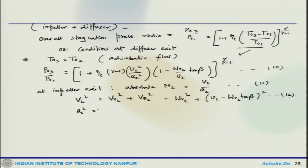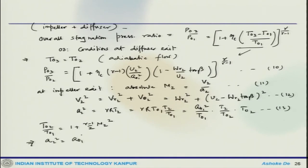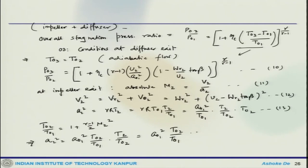The speed of sound A2 squared equals gamma R T2, which is gamma R T01 times (T2/T01), giving A01 squared times (T2/T01) times (T02/T02). Writing T02/T01 as 1 plus (gamma minus 1)/2 times M2 squared, and expanding, A2 squared reduces to A01 squared divided by (gamma minus 1 plus (gamma minus 1) M2 squared).